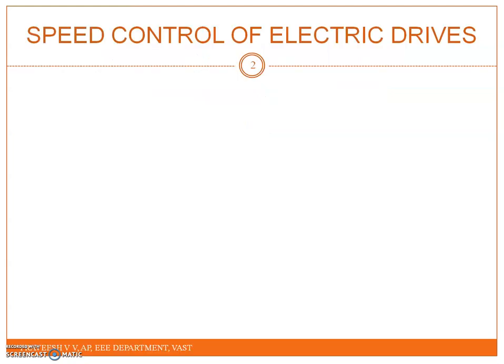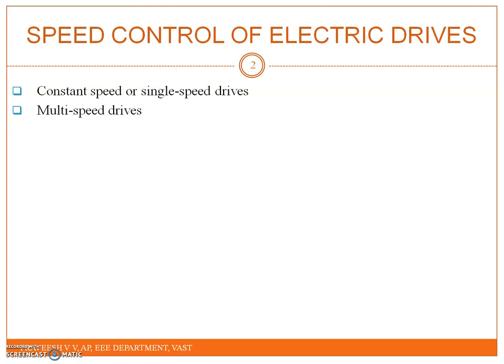Before going to the speed control of electric drives, we will discuss the different classifications and namings of a drive based on operation. Drives where the driving motor runs at nearly fixed speed are known as constant speed or single speed drives. Multi-speed drives are those which operate at discrete speed settings. Drives needing complex speed change and multi-speed drives are called variable speed drives.